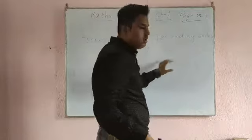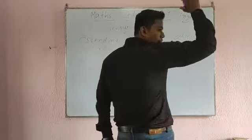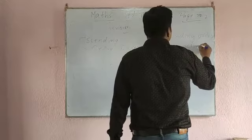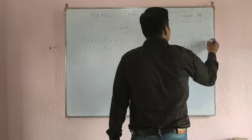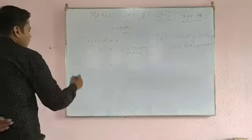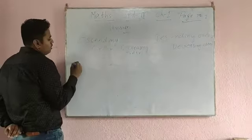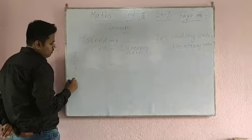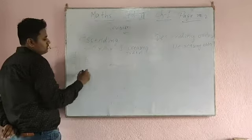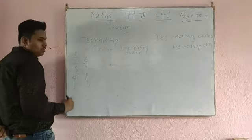Descending order means decreasing order — top to down. For example, ascending order means increasing: 1, 2, 3, 4, 5, 6, 7, 8, 9, 10.